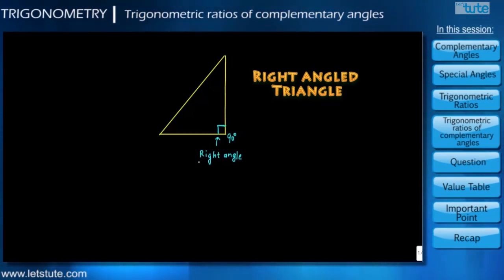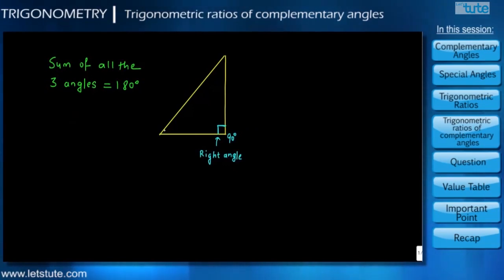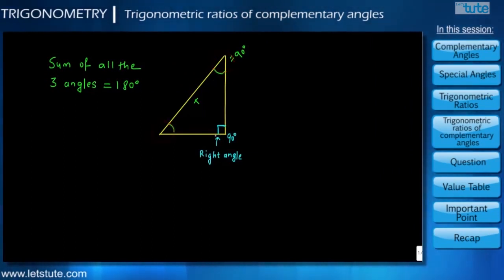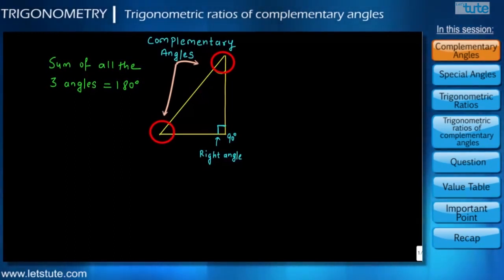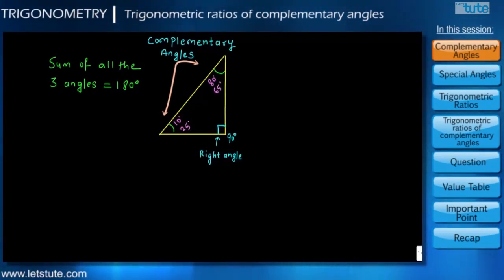We also know that in a triangle the measure of all three angles is equal to 180 degrees. So a measure of one angle being 90 degrees clearly means that the sum of the remaining two angles should be 90 degrees. When the sum of these two angles is equal to 90 degrees, they are called complementary angles. So when one angle is 10 degrees, the other will be 80 degrees; when one angle is 25 degrees, the other will be 65 degrees, and so on.